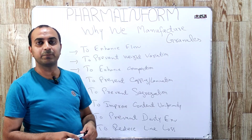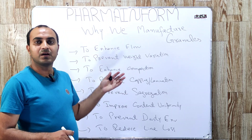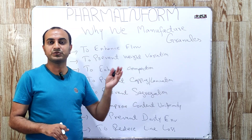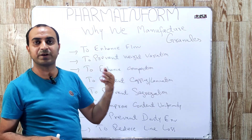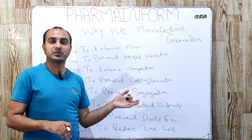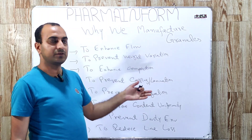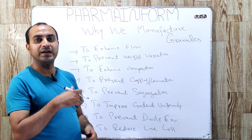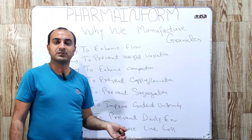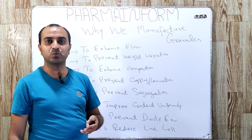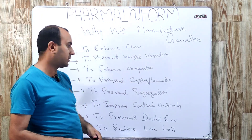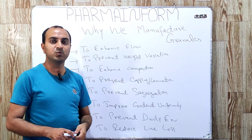The next one is to prevent capping and lamination. We know that powders are elastic in nature and granules are plastic in nature. So, when we apply pressure on powders they tend to regain their original shape and tend to cap or laminate. This problem of capping and lamination is overcome by converting powders into granules.